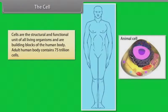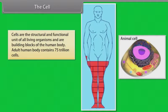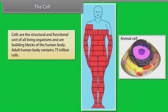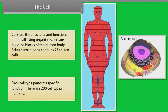Cells are the structural and functional unit of all living organisms and are building blocks of the human body. The adult human body contains 75 trillion cells. Each cell type performs a specific function, and there are 200 cell types in humans.